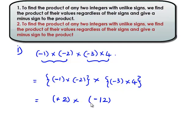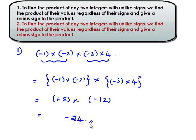Therefore, we have to find plus 2 into minus 12. First we will multiply their values regardless of their signs. That gives 2 into 12 is equal to 24. And when we have two different signs, the product always gives a negative sign — that is equal to minus 24.